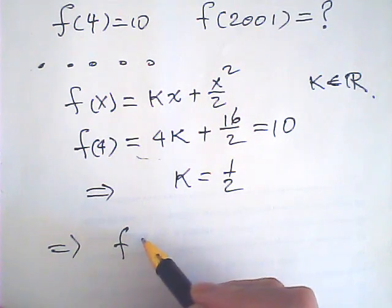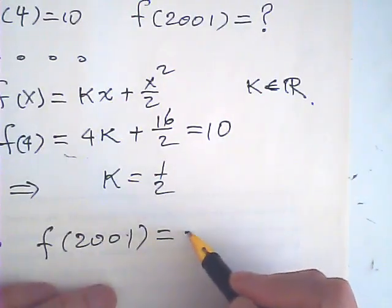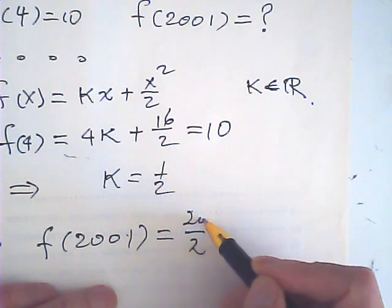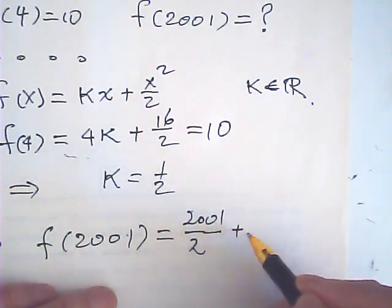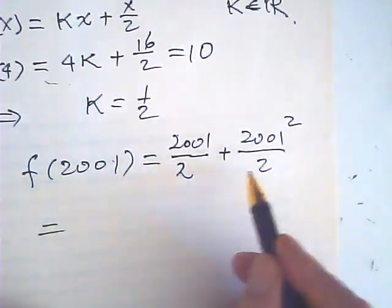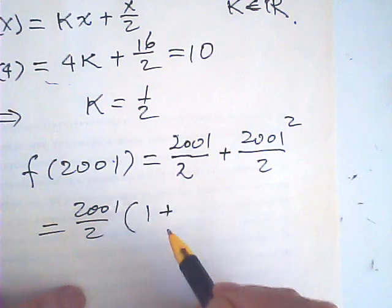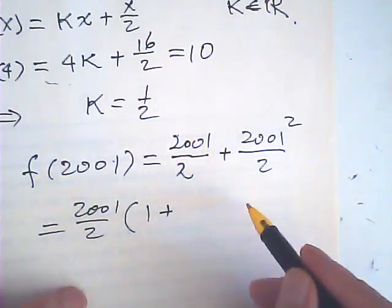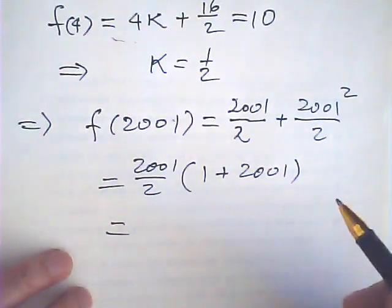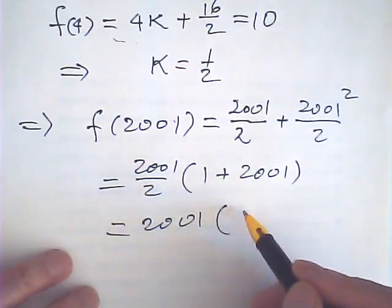Therefore, f of 2001 is equal to half times 2001 plus 2001 squared over two. So, we can draw 2001 out. This is 2001 times 1 plus 2001 over 2. So, this is 2001 multiplied by 1001.